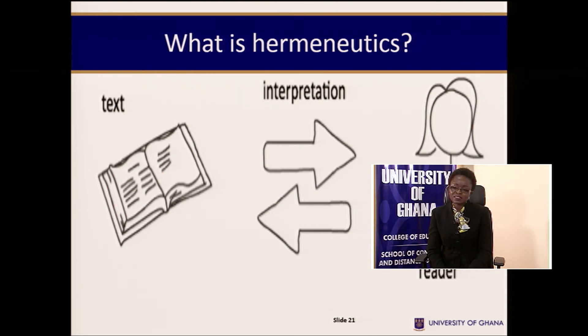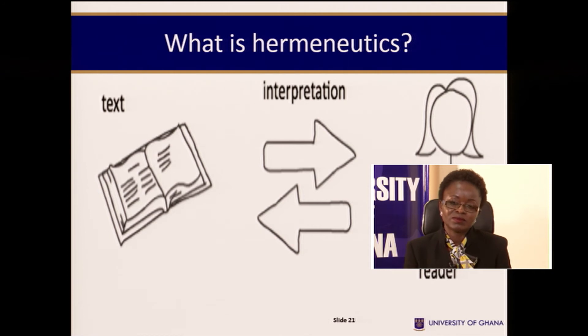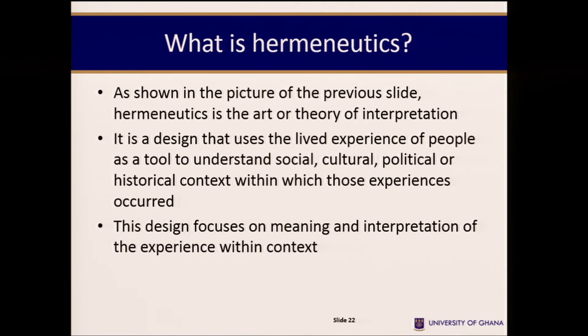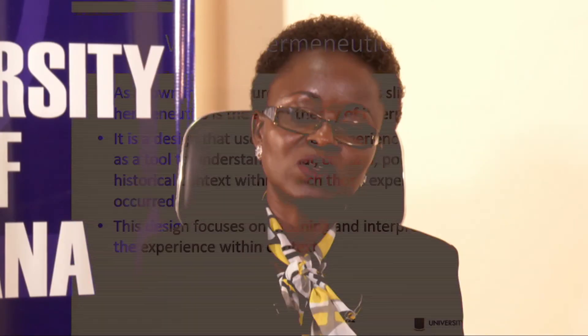Somebody has come across a text that was probably written in the 1930s. People who lived at that time are likely no longer living, and this person wants to understand what was happening then. The best design to use is hermeneutics, so that you can interpret what was happening in those days. It is a design that uses the lived experiences of people as a tool to understand social, cultural, political, or historical context. This means your interpretation should be done within the context of what you are studying — you cannot interpret a phenomenon from the 1930s in the context of 2016. You have to imagine yourself living in those days.